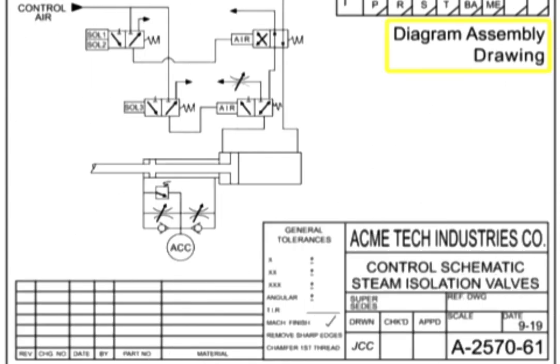A diagram assembly drawing shows installation of equipment using symbols and is often made in pictorial form. Diagram assembly drawings are typically used to depict wiring, piping, and other systems where scale models and dimensions are not required. Each part on a diagram assembly is indicated by a picture.